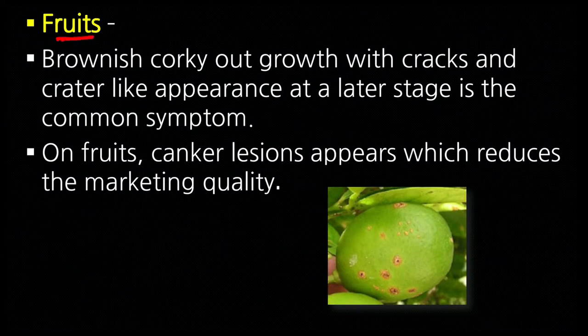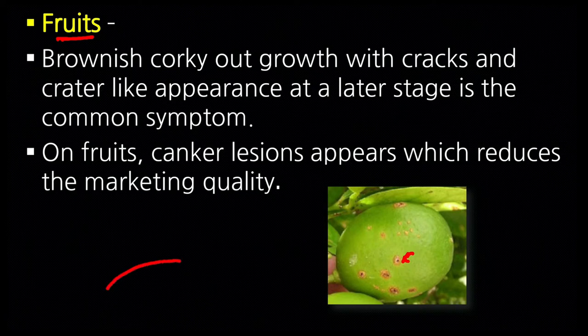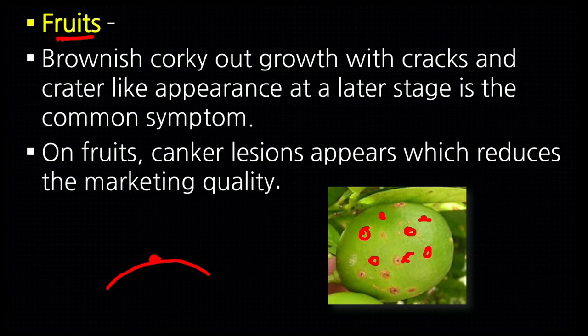In fruits, symptoms are also of the same type, and the yellow halo is also absent. The symptoms remain confined to the bark — they do not move inward. When spots appear in large numbers on fruit, market quality and market value decrease. If symptoms are very severe, fruits remain small and fall prematurely before time.